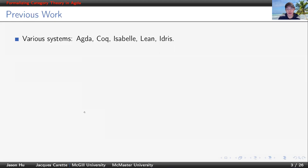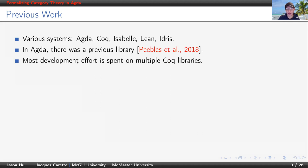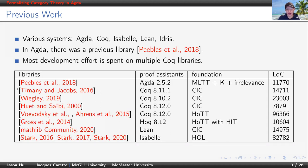For these reasons, many have attempted to formalize category theory in various systems, including Agda, Coq, Isabelle, Lean, and Idris. In Agda, there was a previous library, and most development effort is spent on multiple Coq libraries. Here is a summary table of some previous work. As you can see, many systems are involved here, and indeed, many libraries are in Coq.